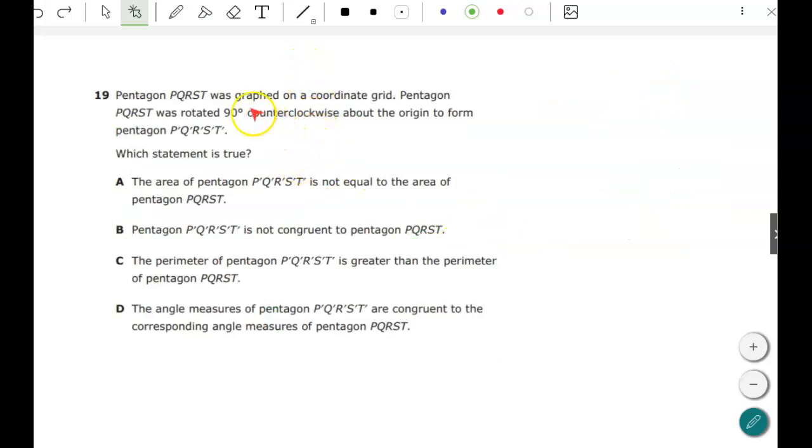All right, number 19. Pentagon PQRST was graphed on a coordinate plane. It's rotated 90 degrees counterclockwise about the origin to form the new pentagon. Okay, it's not changing in size, it's just they're just rotating the pentagon, so turning it without changing the size. Keep that in mind. Let's look at the statements. The area of the pentagon, the new one is not equal to the original. That's not true because it's the same size. Size does not change. The new one is not congruent. That's not true either. The perimeter of the new pentagon is greater. Well it can't be because it doesn't change in size. The angle measures of pentagon, the new one, are congruent to the corresponding. Yes, it is the same size and shape so the angles and lengths of the sides do not change.